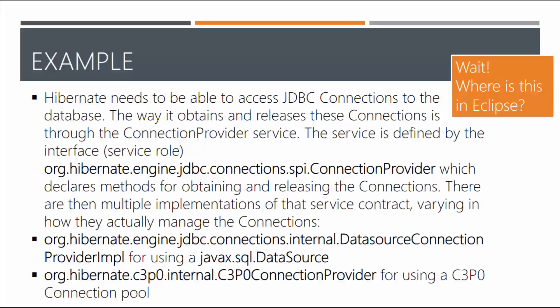There are multiple implementations of the service contract varying in how they manage these connections. For example, you could have org.hibernate.engine.jdbc.connections.internal.DatasourceConnectionProviderImpl for using it with Java DataSource, or you can have a different kind of connection service for using it with a connection pool. Now it should be clear what a service is and what Hibernate needs — it needs to connect to the JDBC connections. Let's take a look at this in Eclipse so you can visually see it.